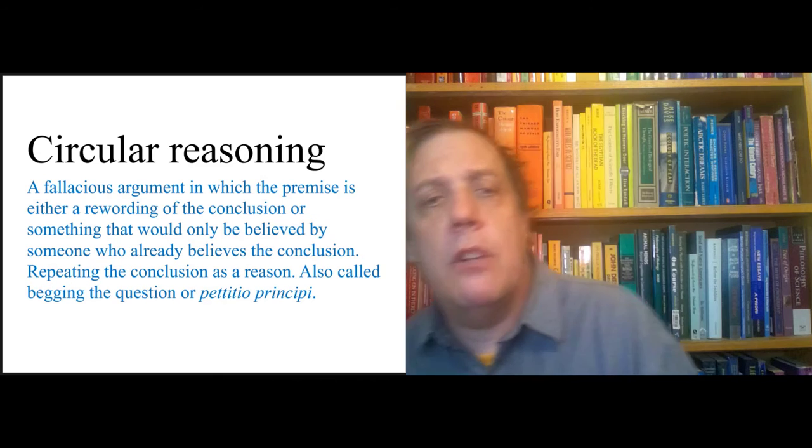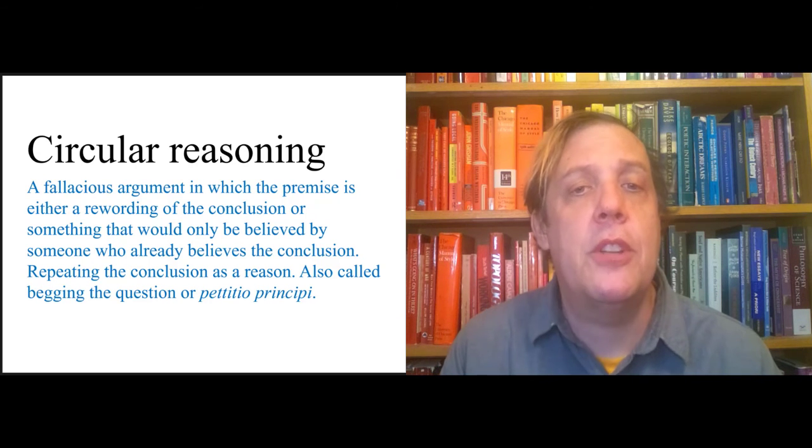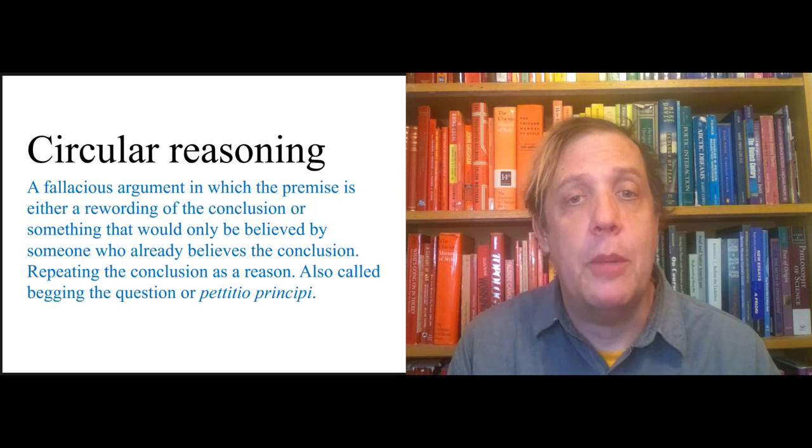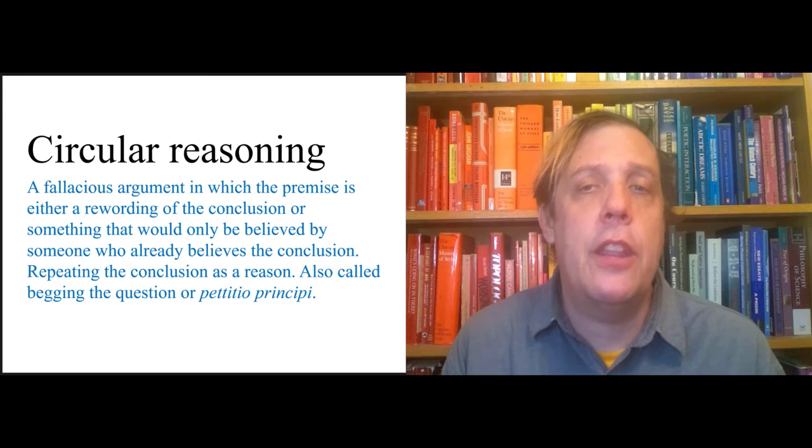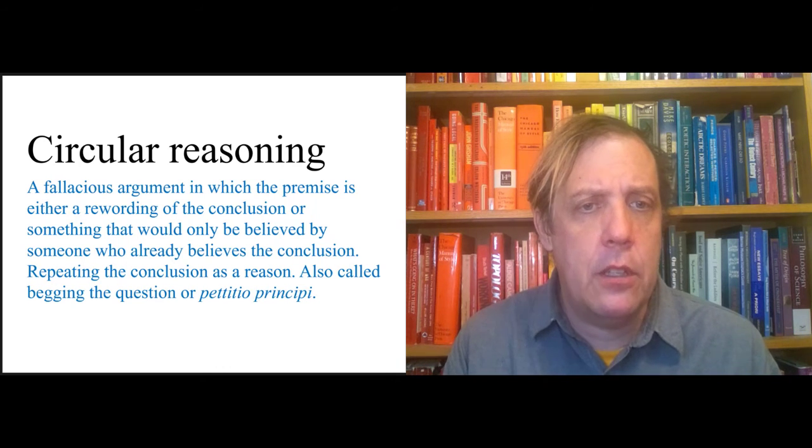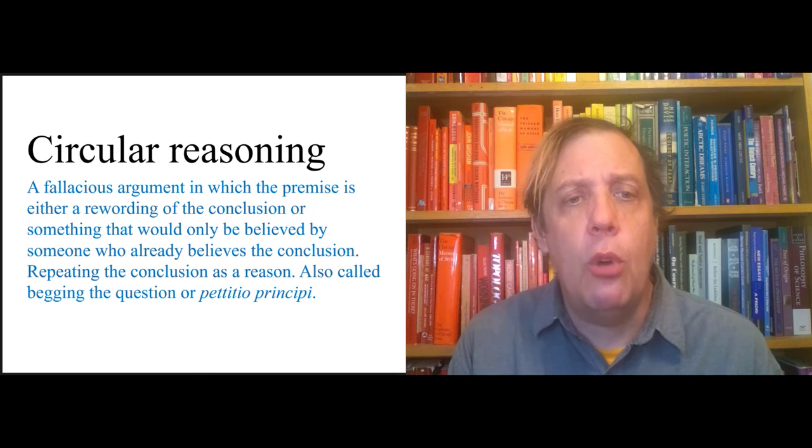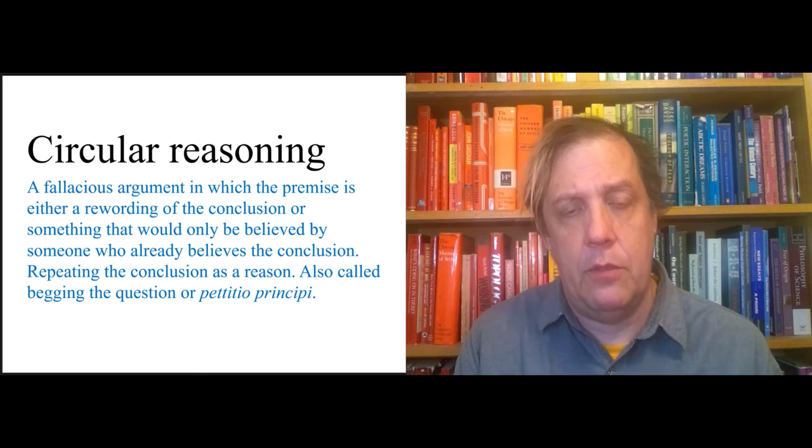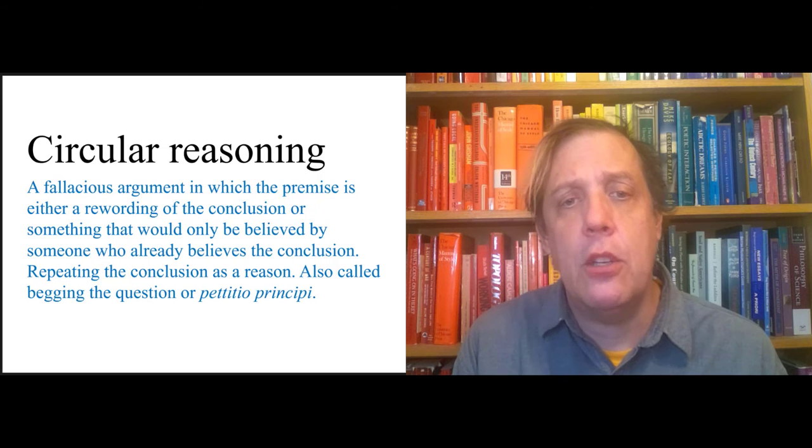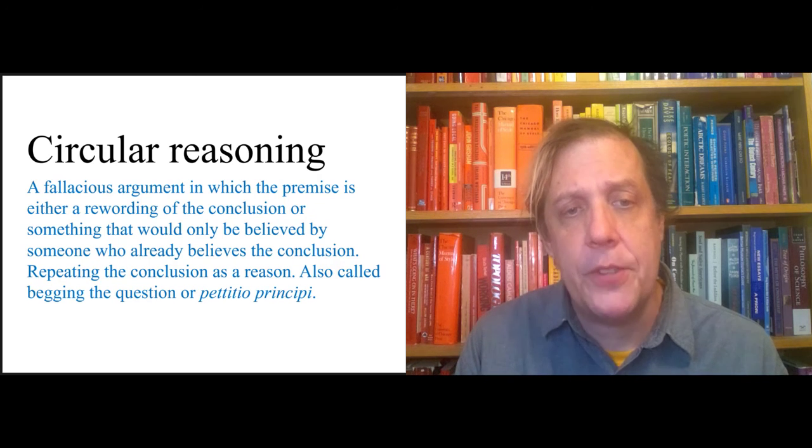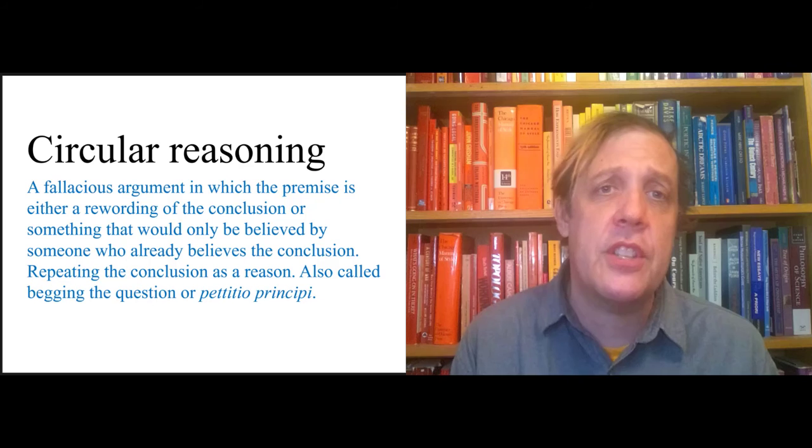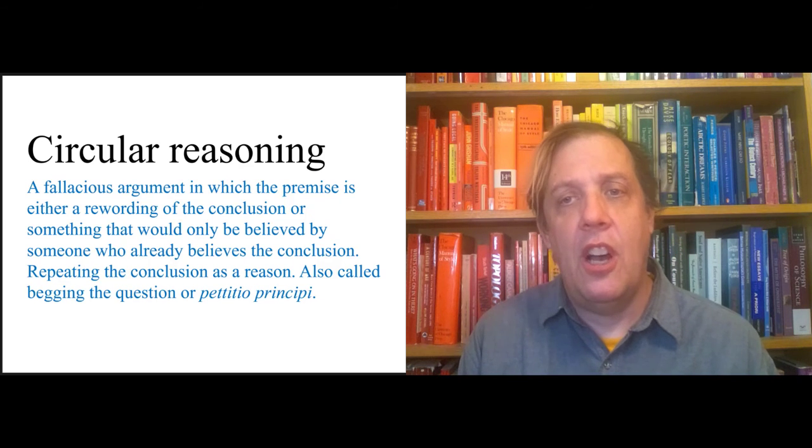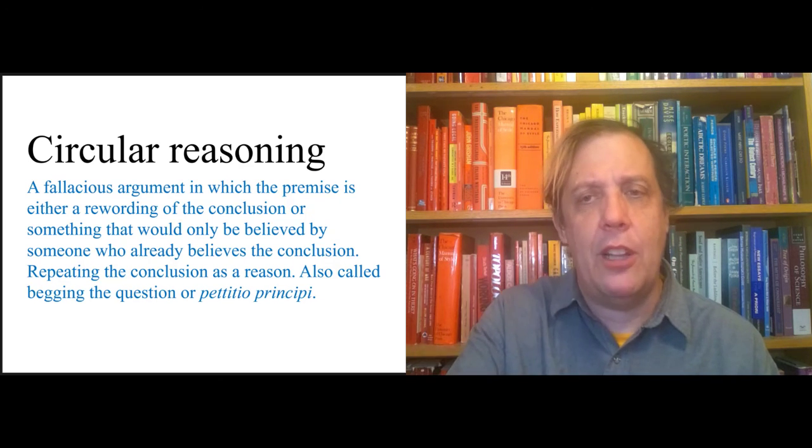Circular reasoning is a kind of fallacious argument—that is, a bad argument that appears to be good—where the premise is either a rewording of the conclusion or something that would only be believed by someone who already believes the conclusion. So you're just repeating your conclusion as if it was a premise. And the point of this is that it can't convince anyone.